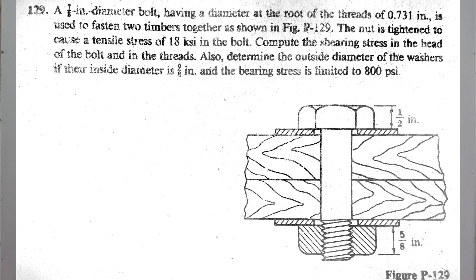A 7/8 inch diameter bolt having a diameter at the root of the threads of 0.731 inch is used to fasten two timbers together. The nut is tightened to cause a tensile stress of 18 KSI in the bolt. Compute the shearing stress in the head of the bolt and in the threads. Also, determine the outside diameter of the washers if their inside diameter is 9/8 inch and the bearing stress is limited to 800 PSI.